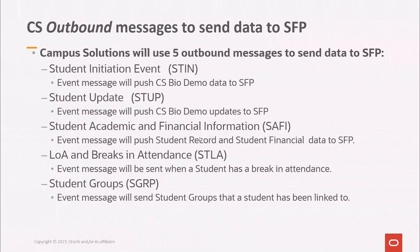There are five CS outbound messages. The Student Initiation Event will push CS Bio Demo Data to SFP and will also create the students in SFP. The Student Update message will push Bio Demo Updates to SFP. The Student Academic and Financial Information message, otherwise known as the SAFI, will push Student Records and Student Financial Data to SFP. The Leave of Absence and Breaks in Attendance message will be sent when a student has a break in attendance. And the Student Groups message will send CS Student Group Data that a student has been linked to for SFP to consume.